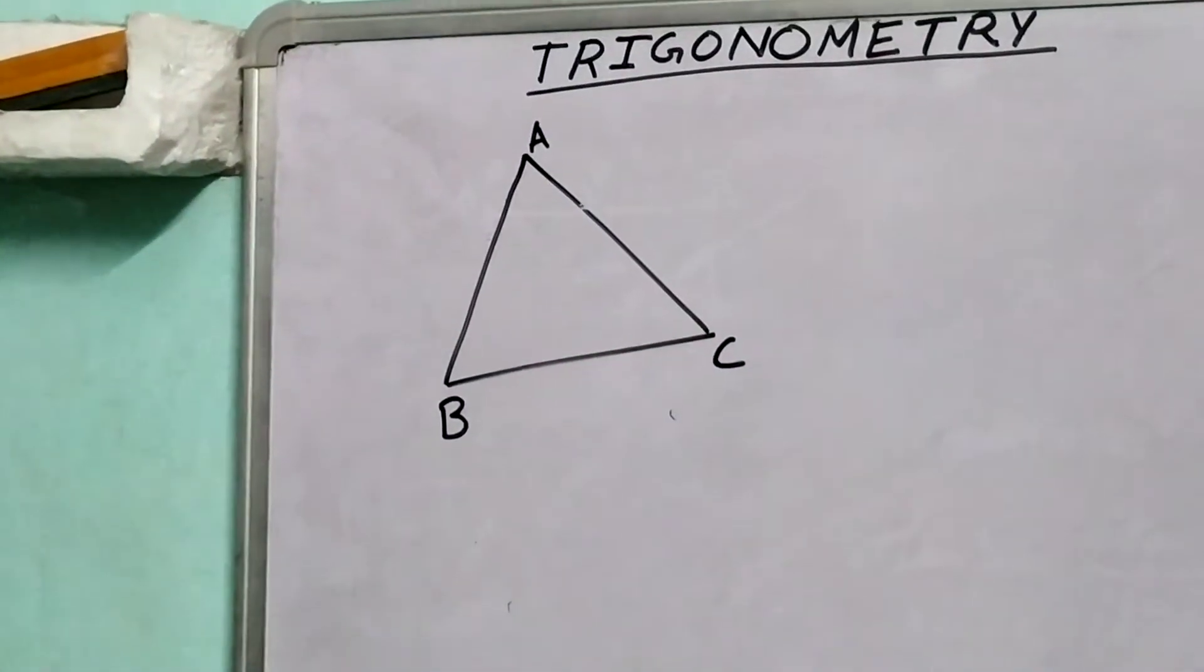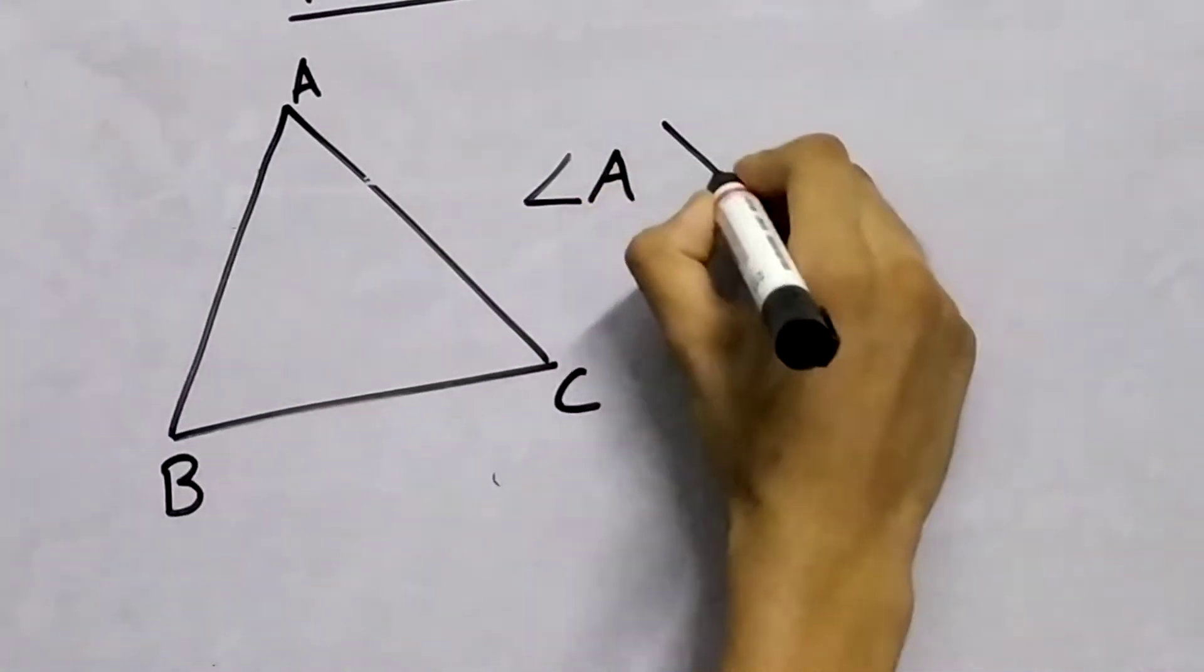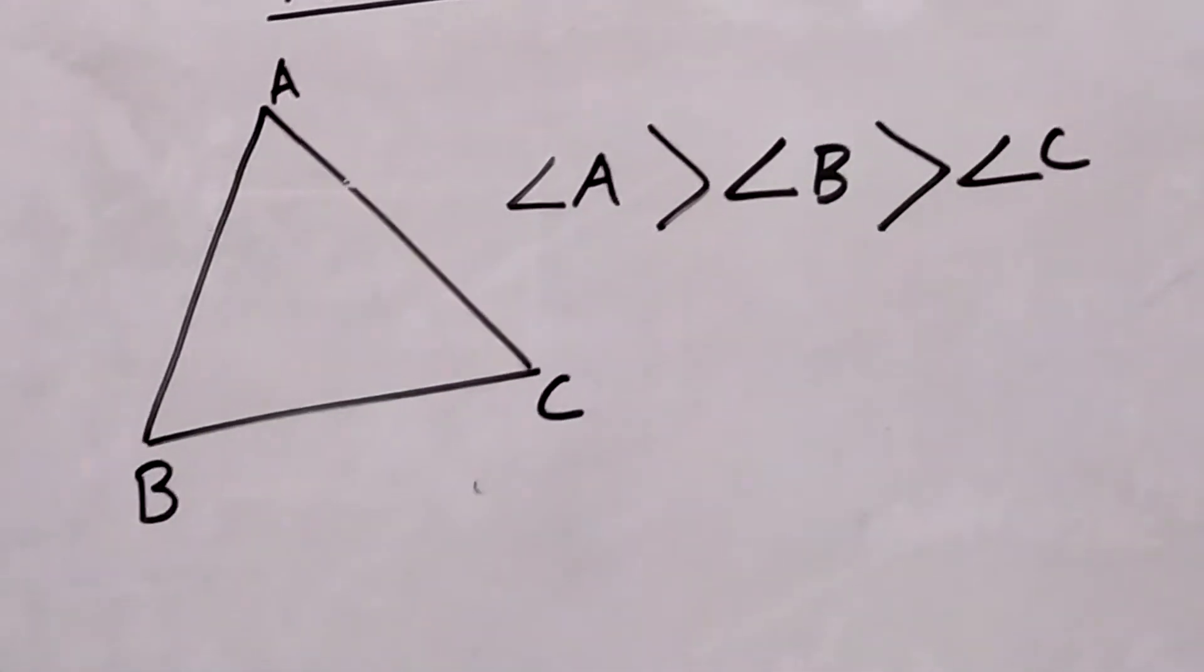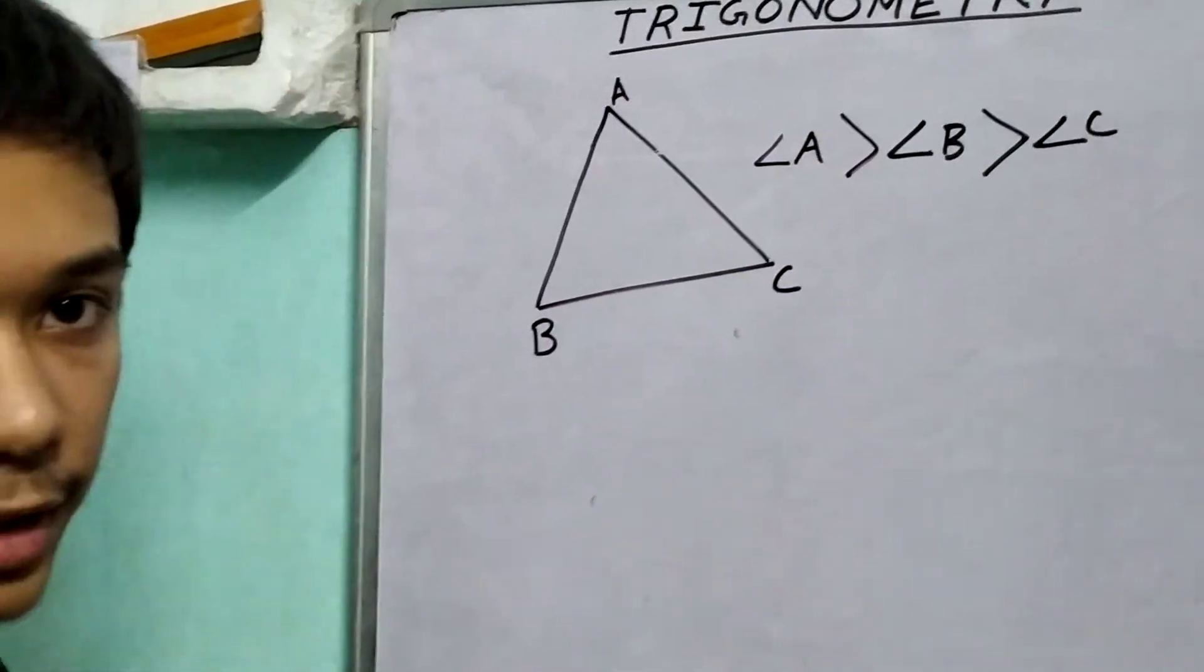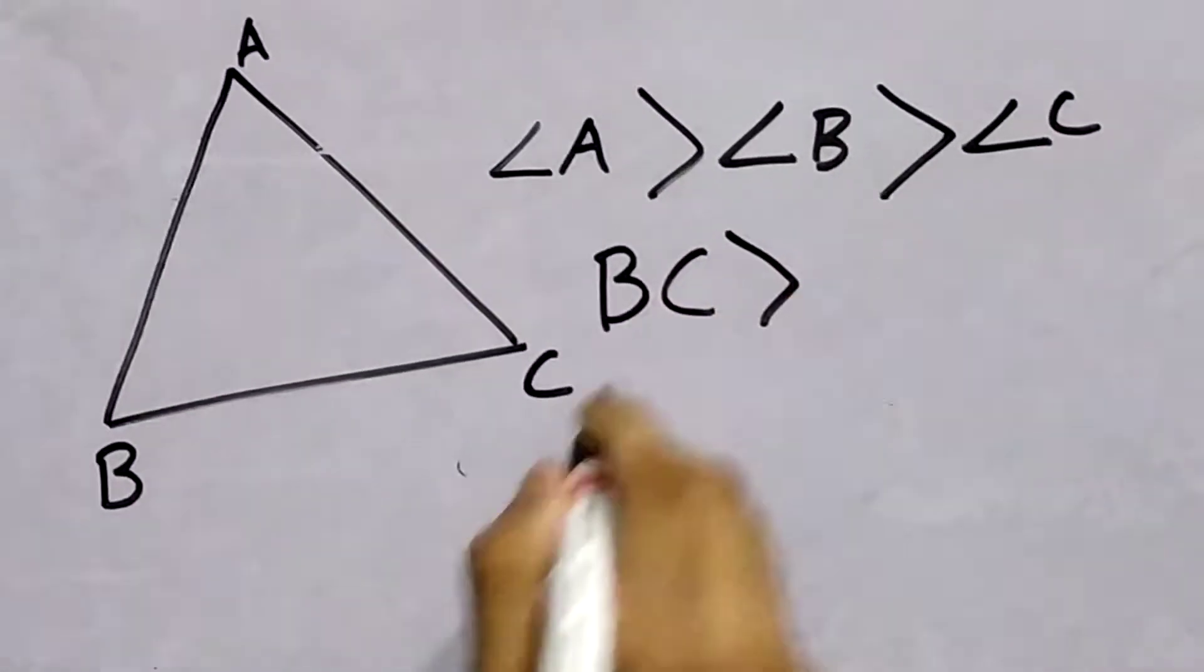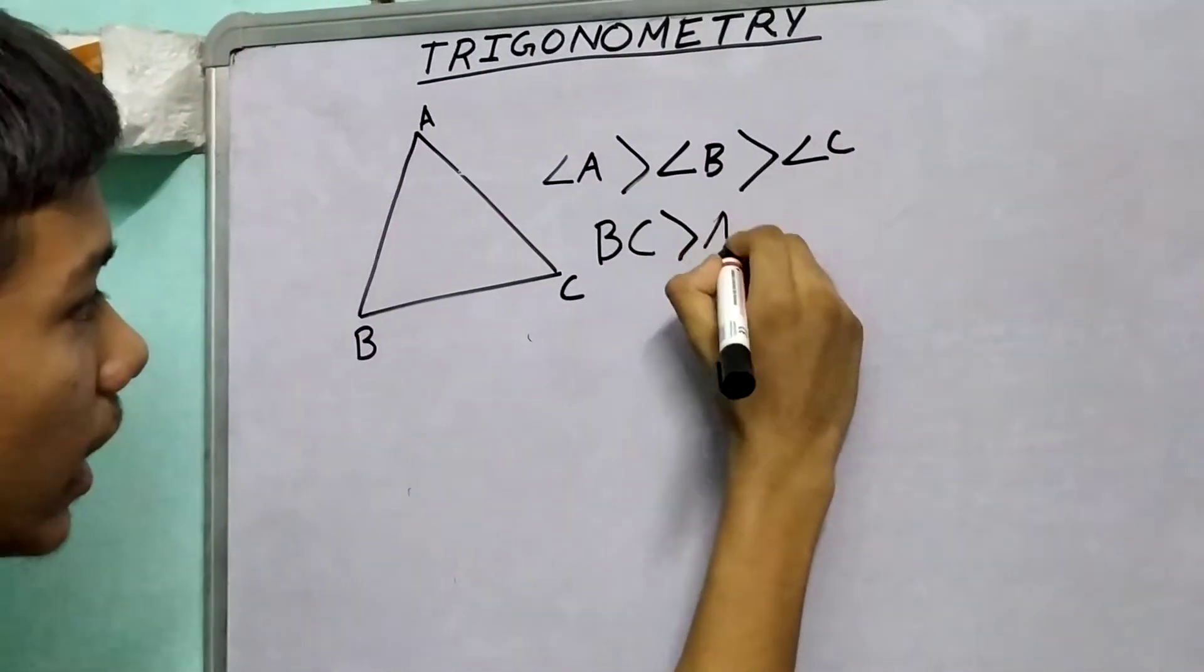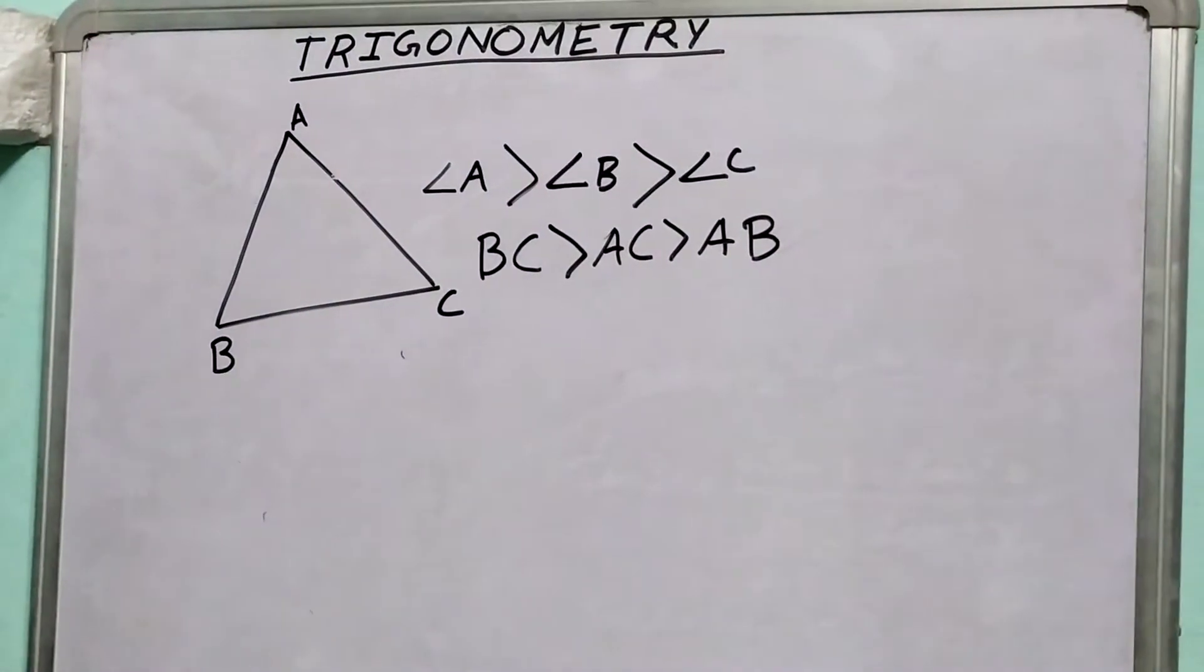Let's do a quick revision first. The angle inequality or side inequality theorem states that if angle A is greater than angle B, and angle B is greater than angle C, then we need to put the sides in descending order. We know that the side opposite to the larger angle will be greater, therefore BC will be the greatest. Since angle B is greater than angle C, AC will be greater than AB.